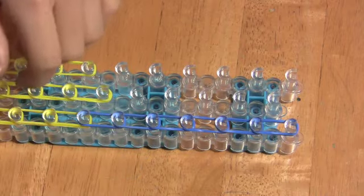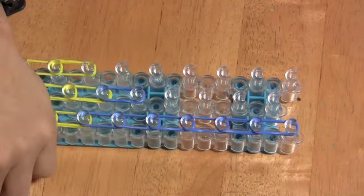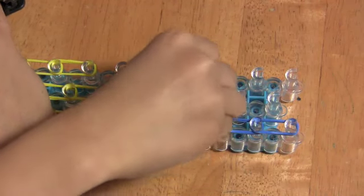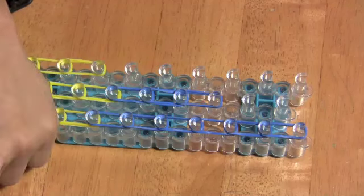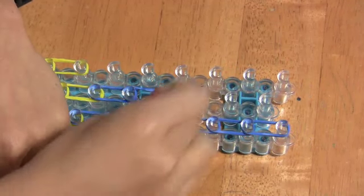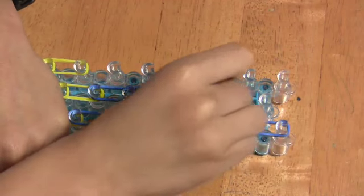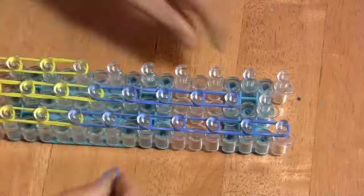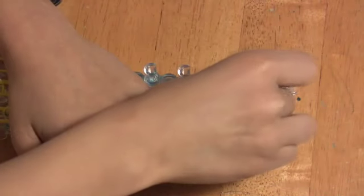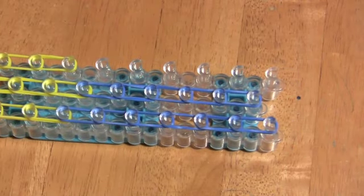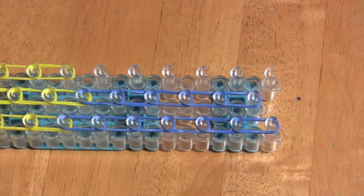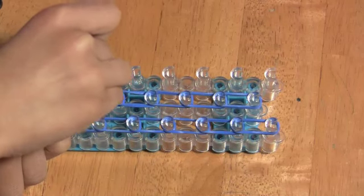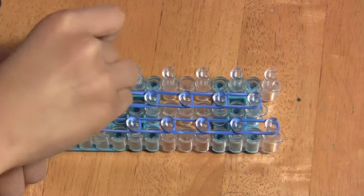And then just do the middle row. Maybe it's a little easier if you just do one by one and then overlap them later, or it's your choice. You can do anything you want, you can just do two at a time if you want. Then do this side.